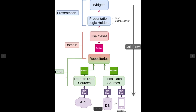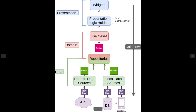The data layer is anything related to data. You have some kind of local data, Firebase, or whatever database you're using — whether it's Hive, JSON, or anything else. This is where you'll be communicating with remote data sources like Firebase and local data sources like whichever local database you're using. The data will be passed to our repositories, which pass them to the use cases, which pass them to the presentation layer's logic holders, which then pass it to the widgets.